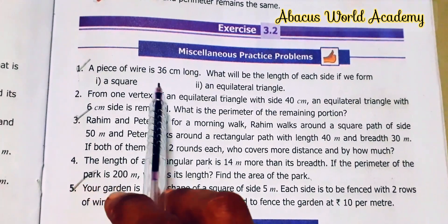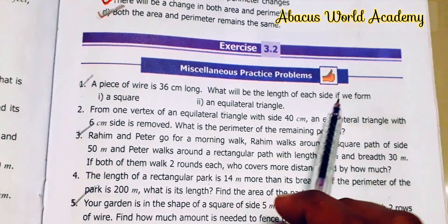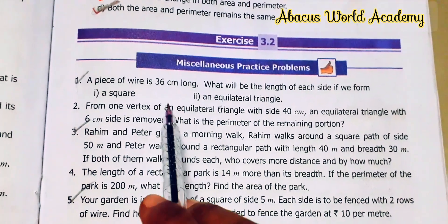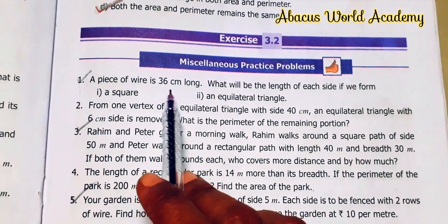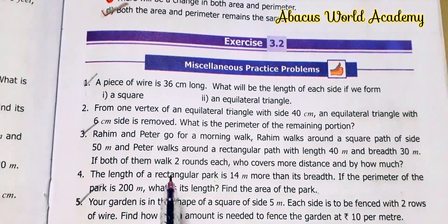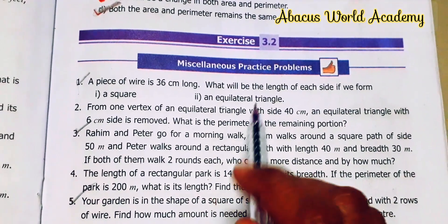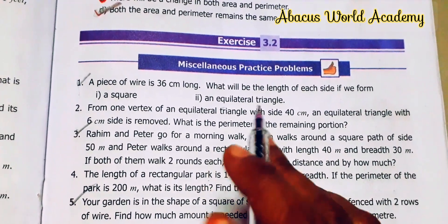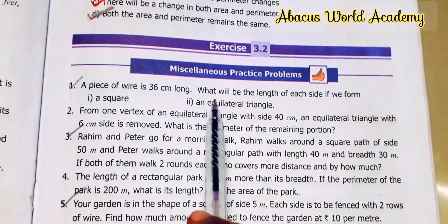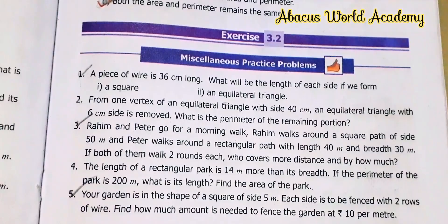First one: a piece of wire is 36 cm long. What will be the length of each side if we form a square? So, we have a piece of wire - its length is 36 cm. Using that wire, form a square shape. We need to find how long each side will be - what will be the length of each side?